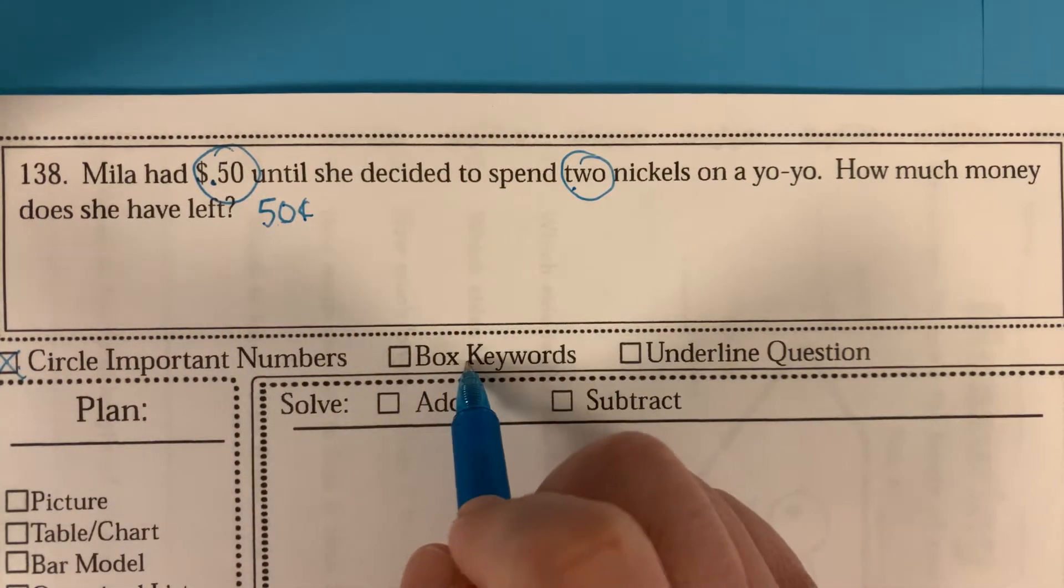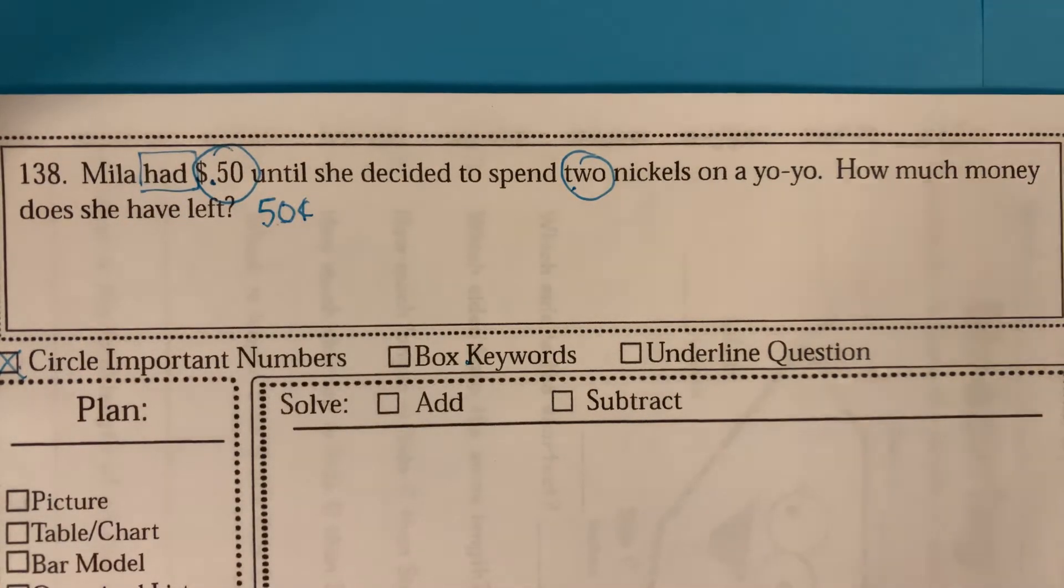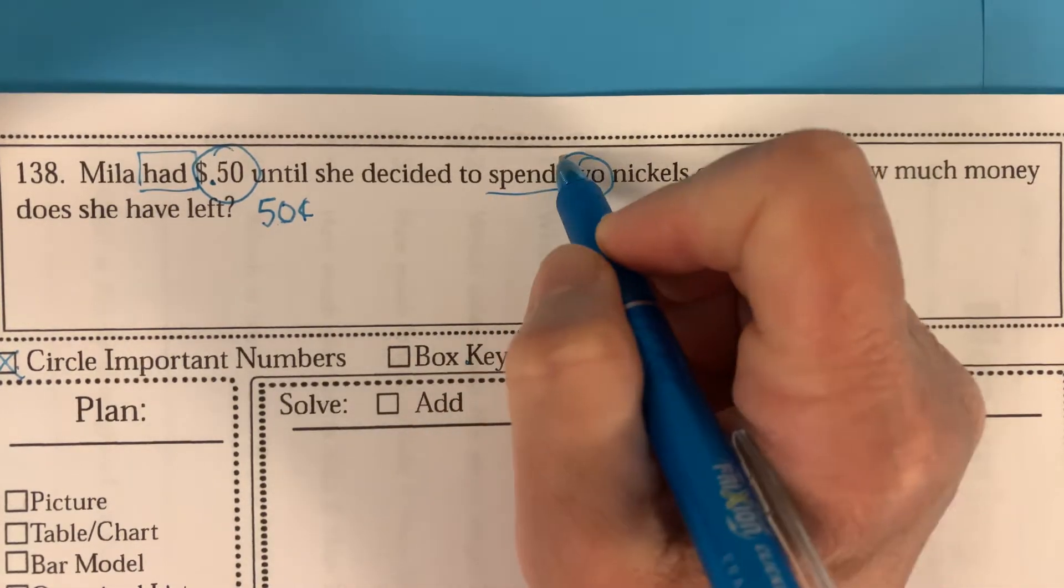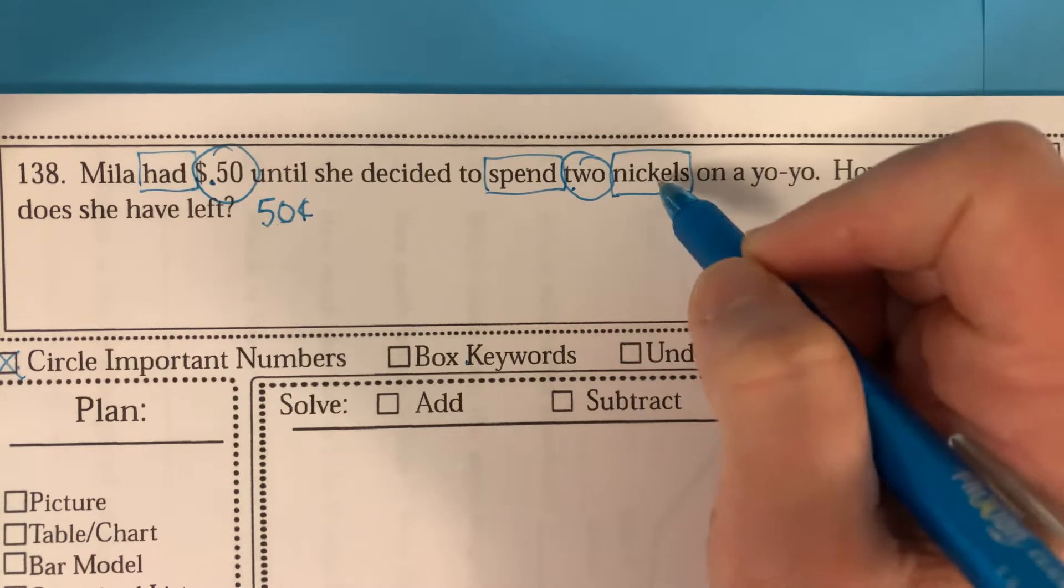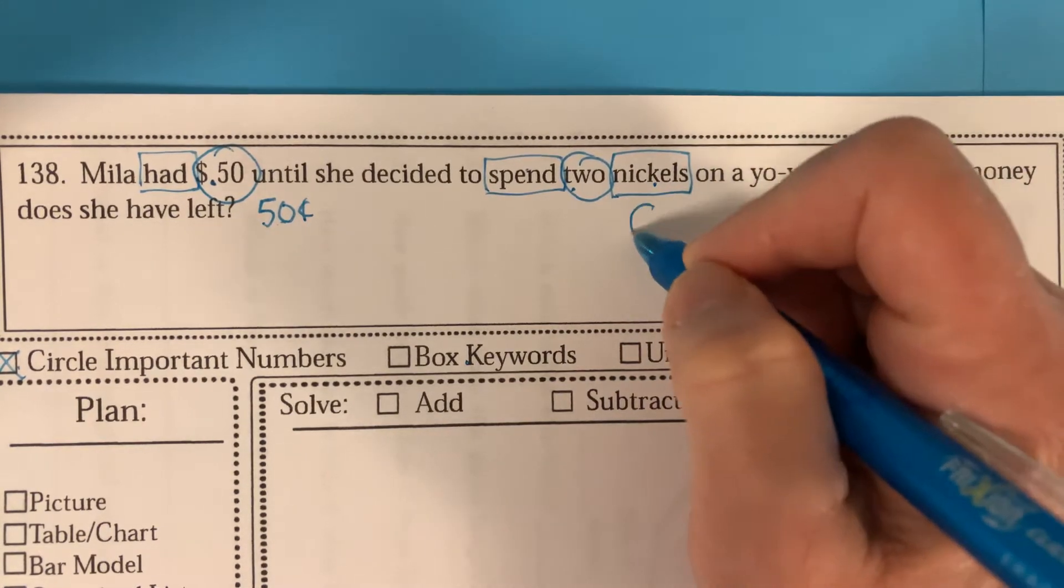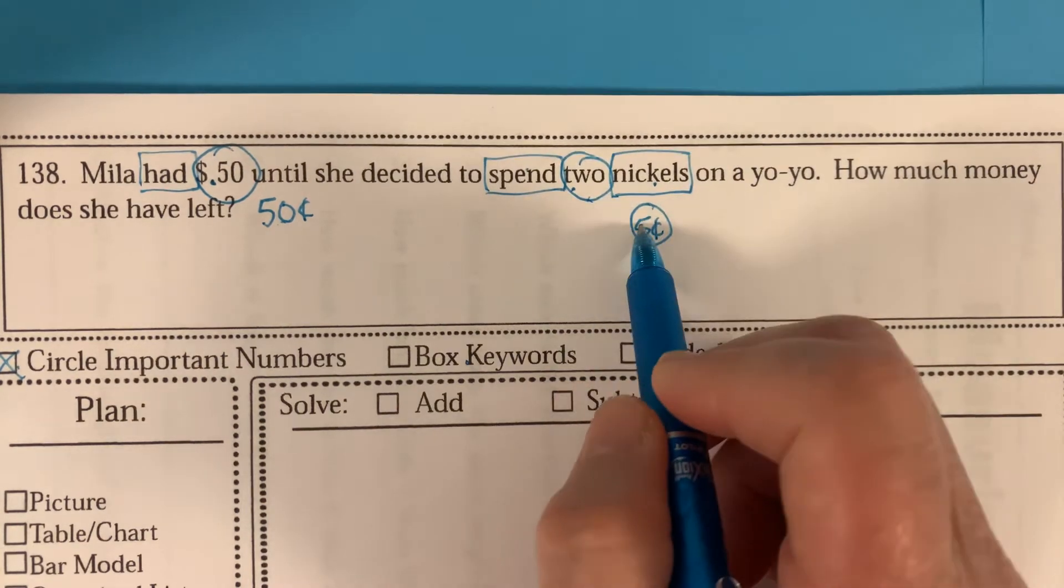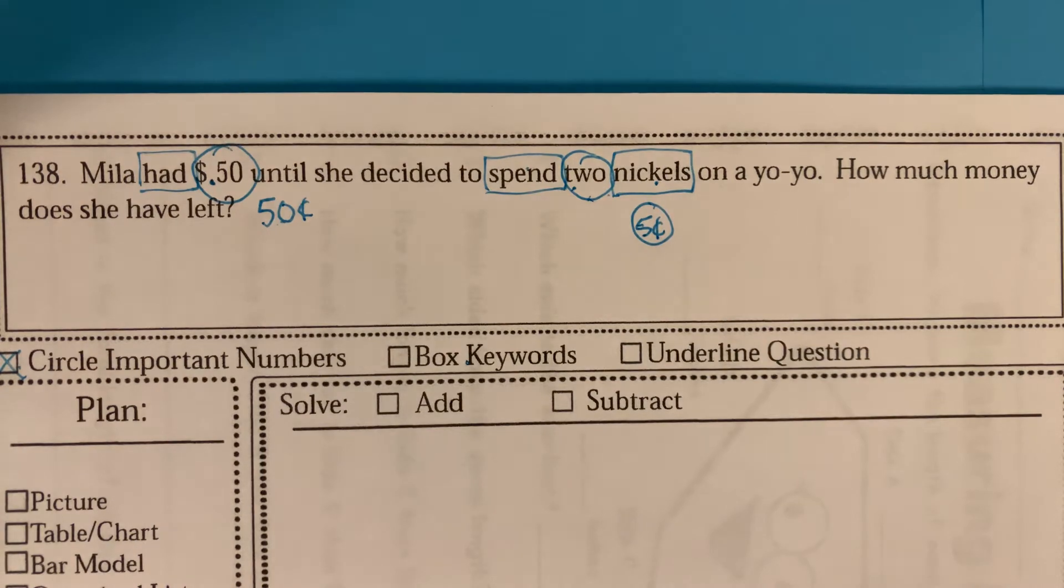So key words, that's where we're going to get that. Okay, so had, that means she had it in her possession, it was hers, and another key word is spend, that means she's getting rid of some, but here's another important key word, nickels. Nickels are worth five cents. So she had two nickels. That's really important to know that it's a nickel and to know the value of a nickel.